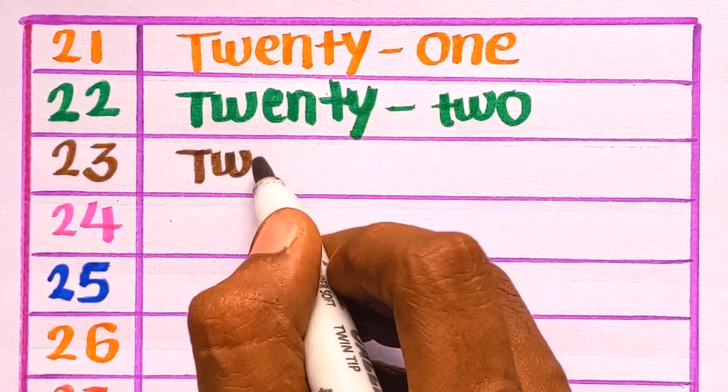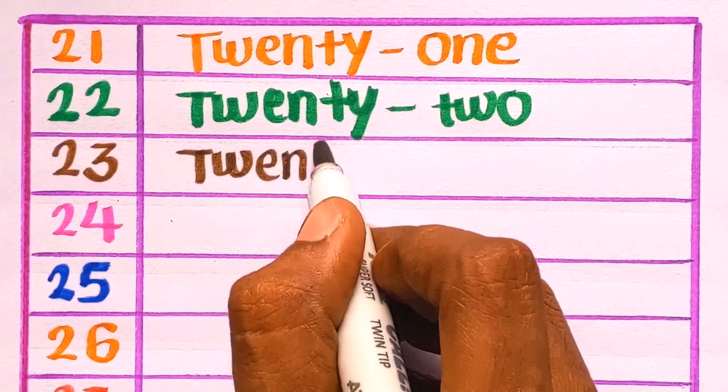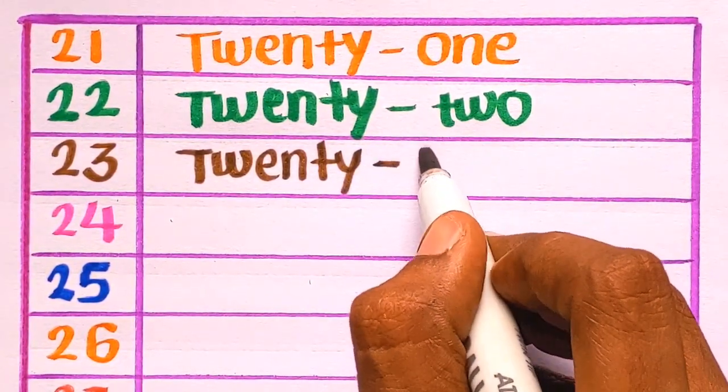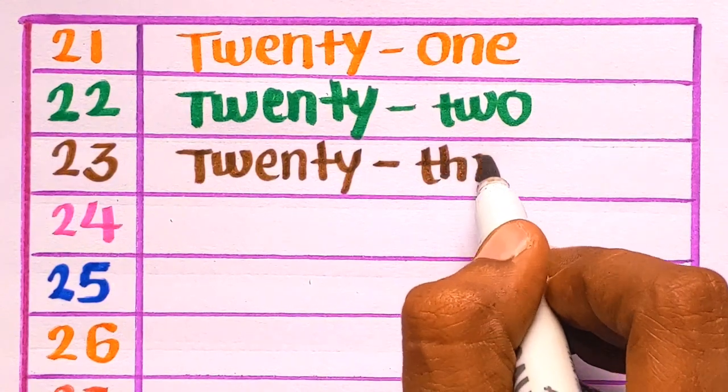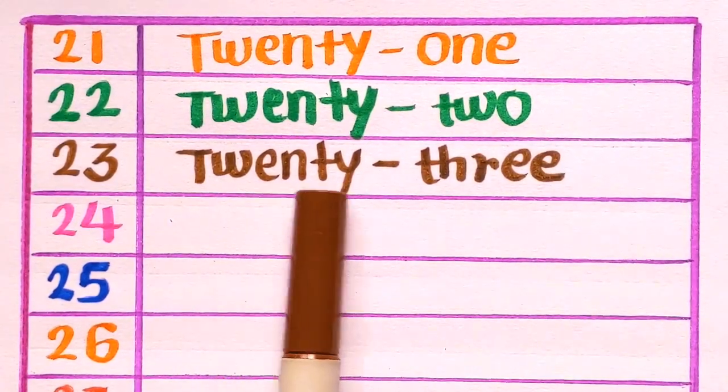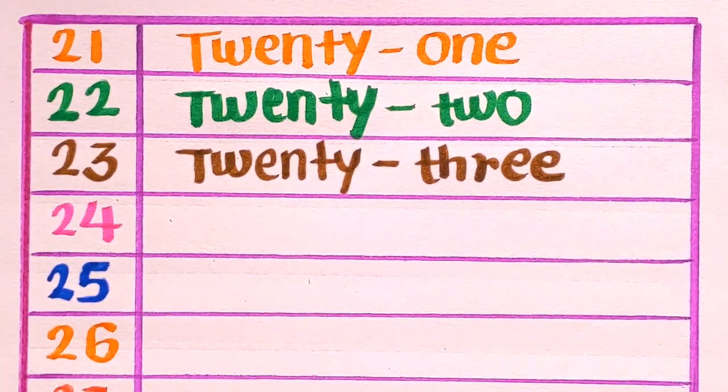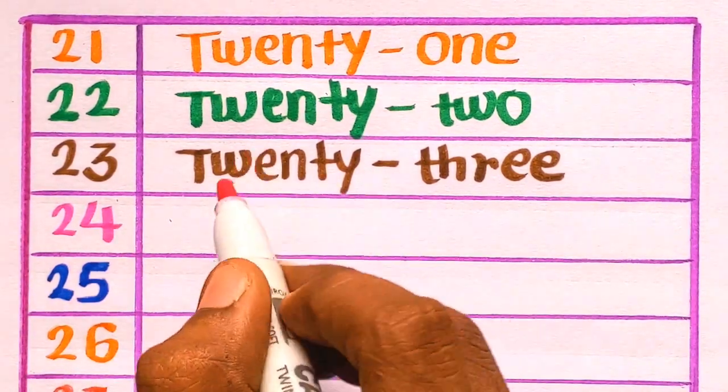T-W-E-N-T-Y-23. T-H-R-E-23. Brown color. Next is 2-4-24.